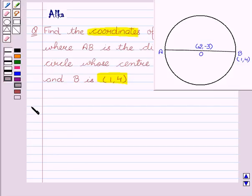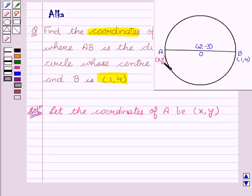Now let's begin with the solution. Now here we have to find the coordinates of A. So let the coordinate of A be (X, Y). So we will write here X and Y.